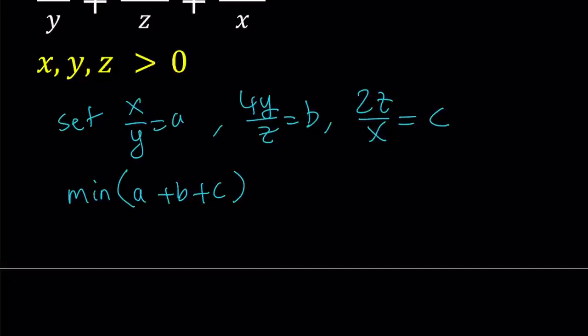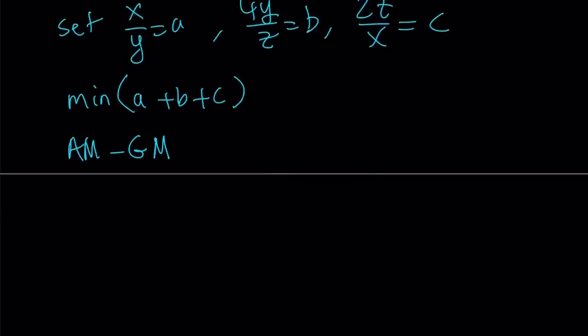Now, how do you minimize the sum of three numbers? This is where the AM-GM inequality theorem comes in. AM-GM stands for arithmetic mean and geometric mean. It's true that the arithmetic mean of a number of positive numbers is always greater than or equal to their geometric mean. The arithmetic mean is basically the average of the numbers. And since x, y, z are all positive, a, b, c are also going to be positive. Therefore, AM-GM applies to this situation.